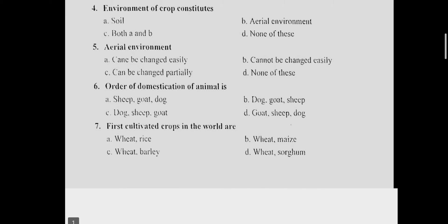Question 4: The environment of crop constituents. Answer is C, which means both A and B — the edaphic and aerial environment. Question 5: Aerial environment. Answer is B, because it cannot be changed easily.